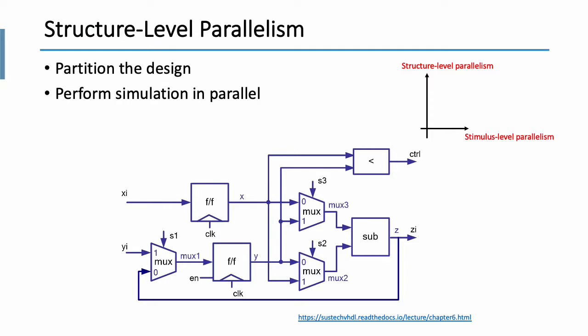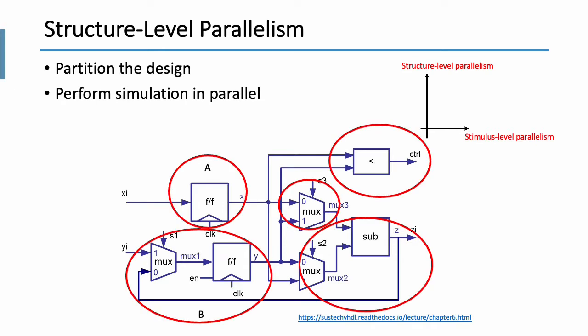So here, let me talk about how we parallelize the RTL simulation. Well, there are two levels of parallelism. First, structural level parallelism, which most of the simulator will do, is to partition the design and perform simulation in parallel. So take this circuit as an example. What we do is to partition this circuit to, say, five blocks. And here, the partition A, partition B can be simulated in parallel. And that's what we call structural level parallelism.